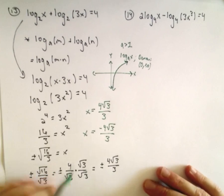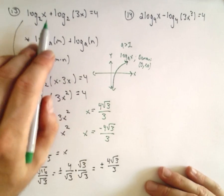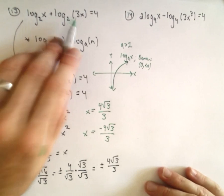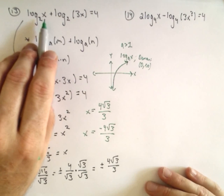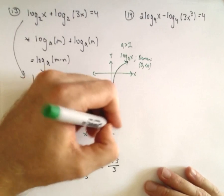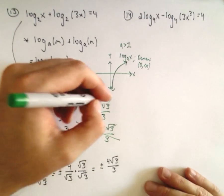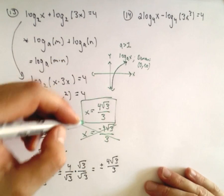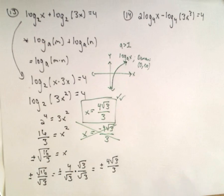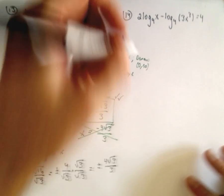Notice if we try to use our negative 4 root 3 over 3, if we put that into our logarithm, either one of the terms, we're going to get a negative number. That's going to make it undefined. So that negative value is not going to be a solution. You can check, though, that the 4 root 3 over 3 does check out and works. Okay, so just one solution to that first equation.